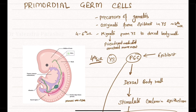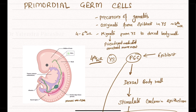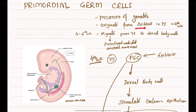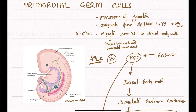Hello dear students, today we are going to discuss about the primordial germ cells. These cells are the precursor of gametes and these cells originate from the epiblast in the yolk sac around the fourth week of gestation.